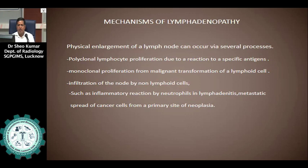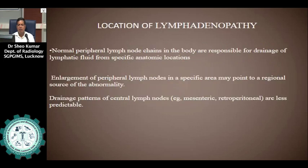The mechanism of lymphadenopathy: physical enlargement of a lymph node can occur via several processes. These include polyclonal lymphocyte proliferation due to a reaction to a specific antigen, monoclonal proliferation from a malignant transformation of lymphoid cells, and infiltration of the nodes by non-lymphoid cells such as inflammatory reaction by neutrophils in lymphadenitis or metastatic spread of cancer cells from a primary site of neoplasia.